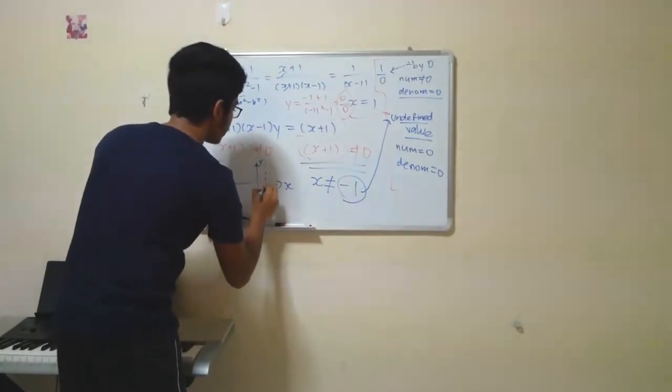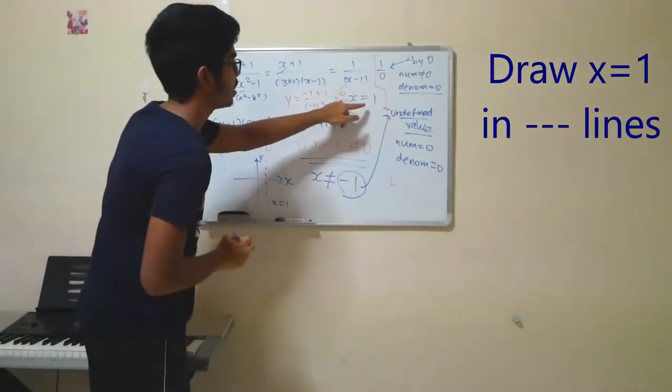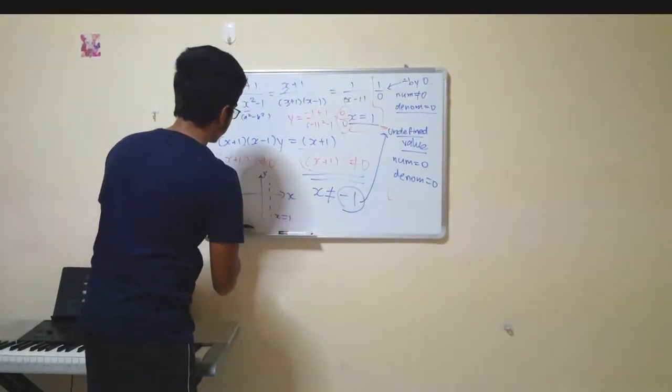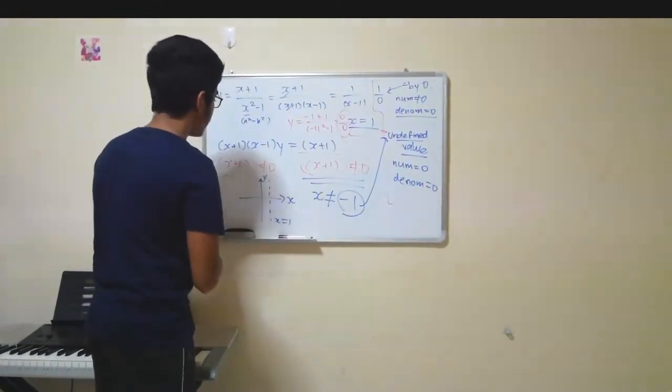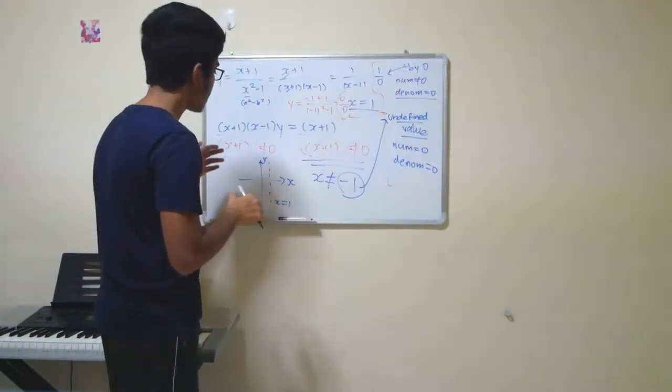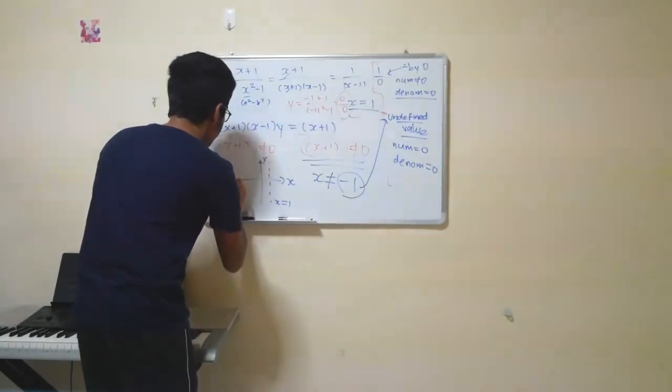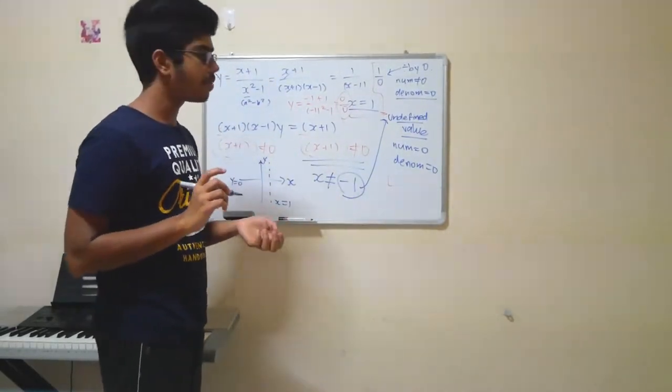the asymptote, which is x equals to 1, is right here, correct? And then, x does not equal to minus 1, which you'll take note of. Now, how do you find the horizontal asymptote? I'll be explaining it in the next video in detail, so please stay tuned. But, in this case, it's y is equal to 0.